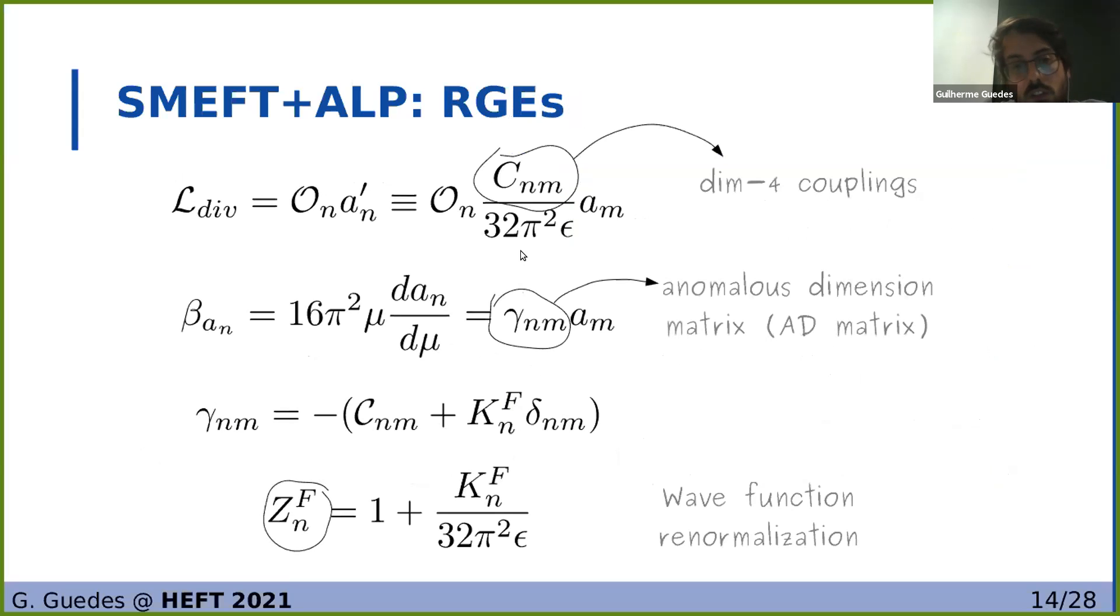So after calculating all these divergences, the divergent part of our Lagrangian will look like this in which we will factor out here the dimension five couplings, which we find by A, and this C matrix only gets dimension four couplings. Here the off-diagonal terms correspond to the mixing terms that we saw before. So we can construct our beta function and after factoring out dimension five couplings we get the anomalous dimension matrix which is constructed with the C matrix that I mentioned before and the wave function renormalization of the fields that construct the operator in question.